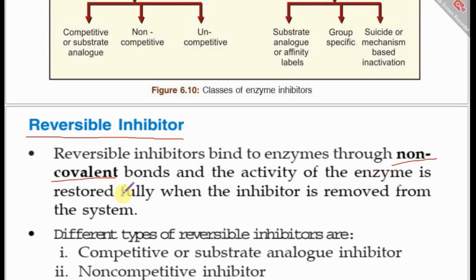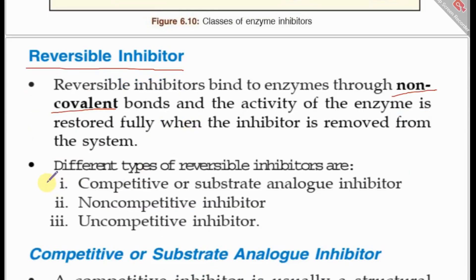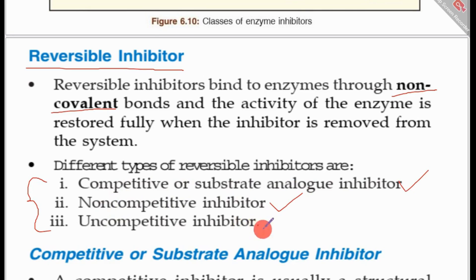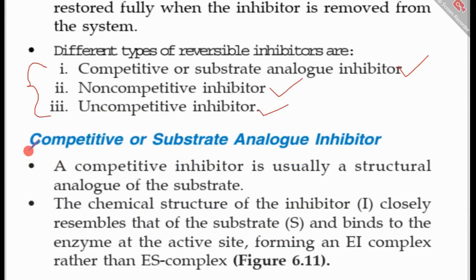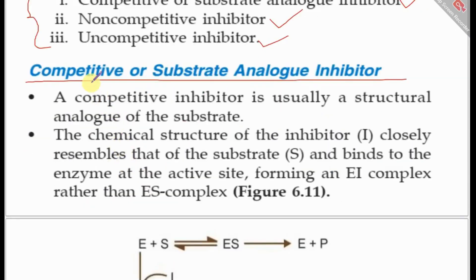Reversible inhibitors bind with enzymes using non-covalent bonds, and the activity of inhibited enzymes can be fully restored when the inhibitor is removed. We have three subtypes of reversible inhibitors: competitive or substrate analog inhibitors, non-competitive inhibitors, and uncompetitive inhibitors.